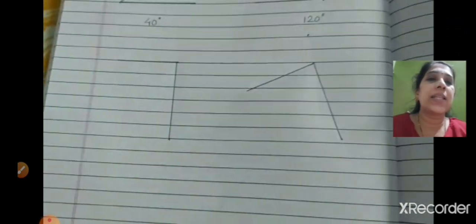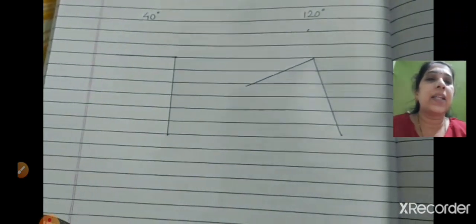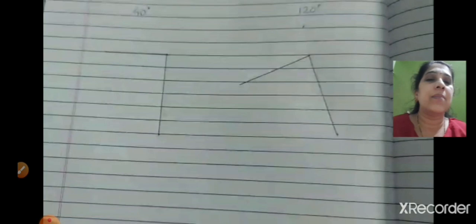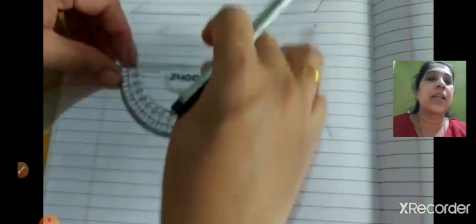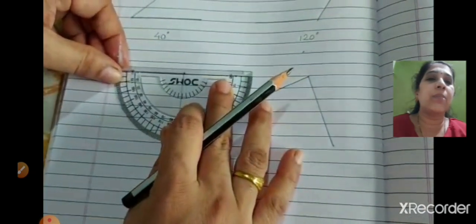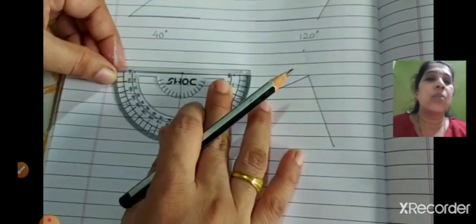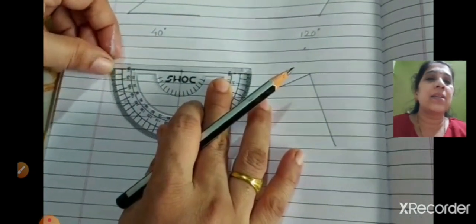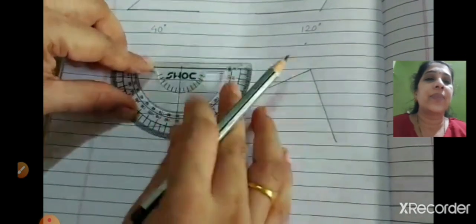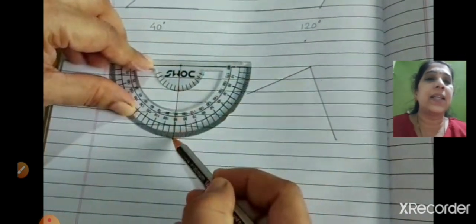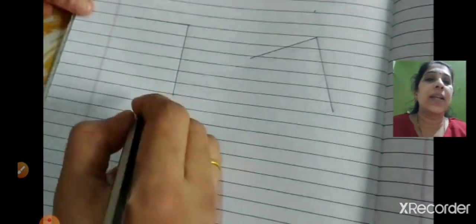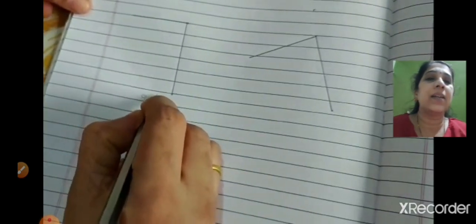Moving to the third figure, you can see it's a right angle, but we will still measure it. Keep the center of the protractor at the common point where both lines join, and you can see that it is 90 degrees. Write it as 90 degrees.